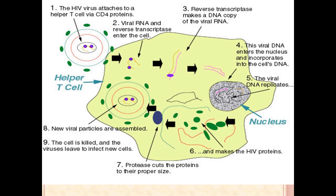This is a more realistic picture of what happens. The helper T cell, or CD4 cell, gets bound by the HIV virus, which fuses along the cell membrane. The RNA is converted to DNA, which integrates into the cell DNA, and viral proteins and RNA are replicated. The immature HIV virus is released from the cell and starts destroying other helper T cells.